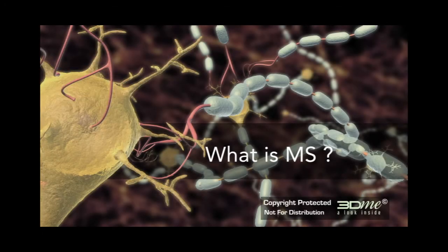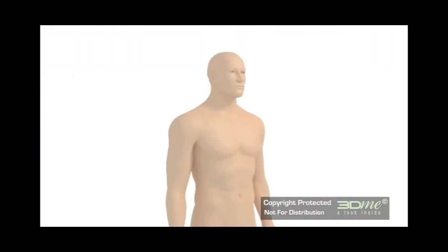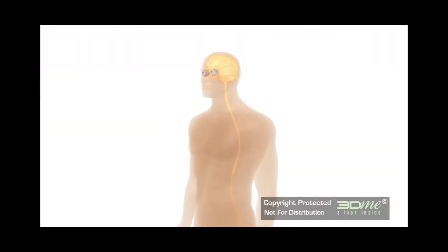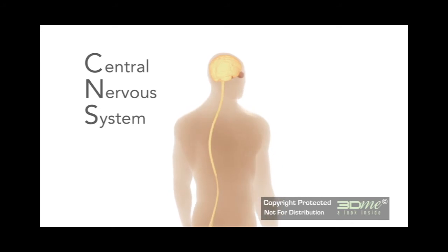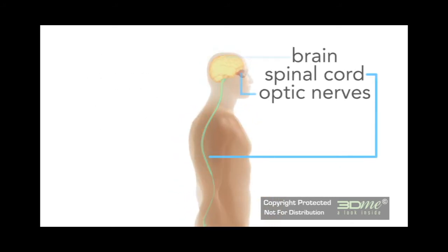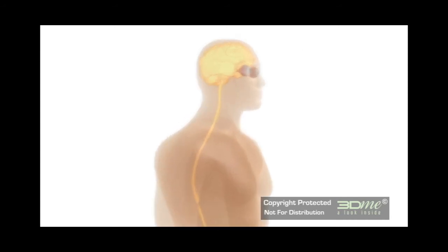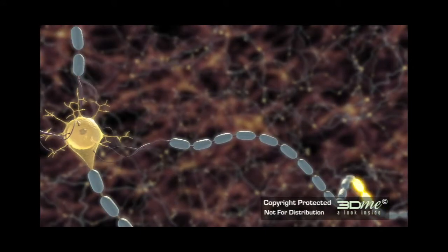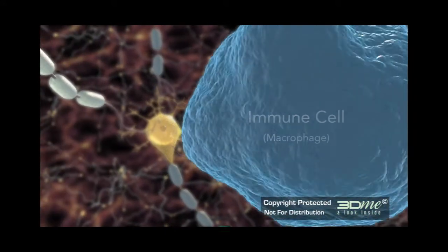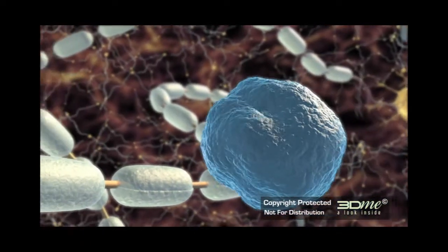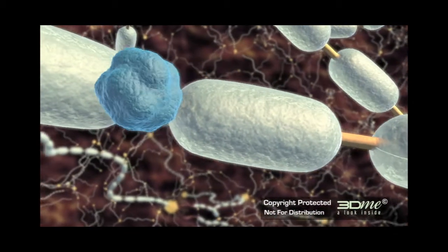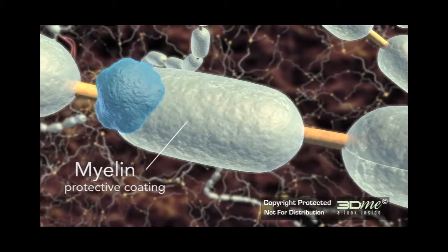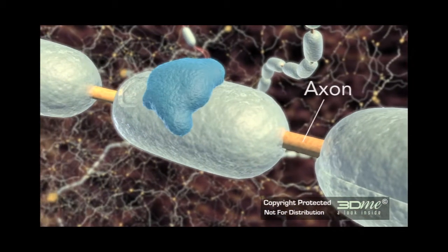So, what is MS? MS is thought to be an autoimmune disease that affects the CNS, the central nervous system, which is made up of the brain, spinal cord, and optic nerves. In MS, the immune system, which usually works to protect the body, mistakenly starts to attack the body's own tissue. The primary target of this attack is thought to be myelin, the protective coating around the nerve cells in the CNS that facilitates nerve conduction.